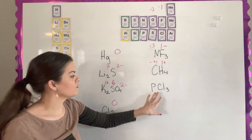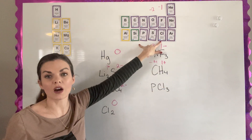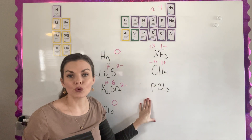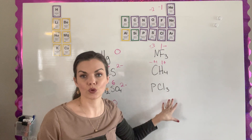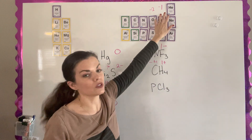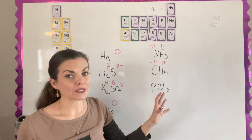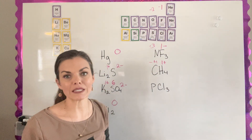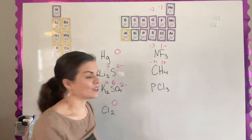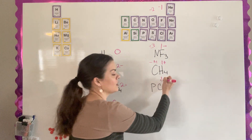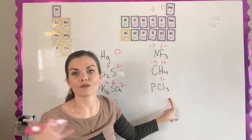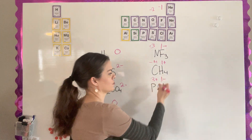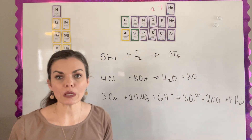For the last one, PCl3 — phosphorus and chlorine are both non-metals, so it's a covalently bonded compound. There's no rule for phosphorus, but the last rule says chlorine is usually negative one, and for most of this class it will be. That's why I have my students write it on top of their periodic table. With three chlorines at negative one, that's a total of negative three, so phosphorus must be positive three.